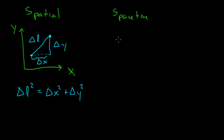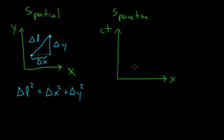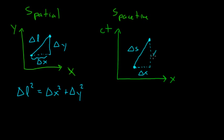Now in space-time, the picture becomes a little bit different. I have a spatial axis and a c-times-time axis, and I want to know the distance between two points, which I'll call delta S — just to note that we're talking about a slightly different thing. These are two events in space-time: at a particular point in space and at a particular moment in time.